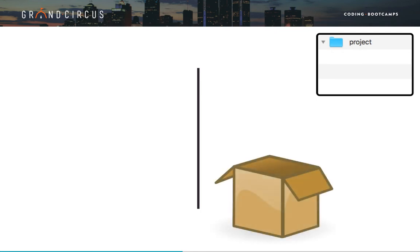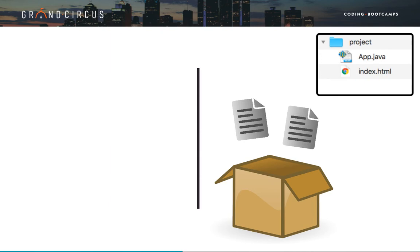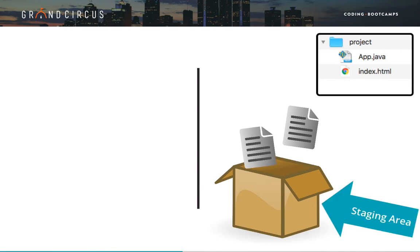Let's summarize the functionality of Git using the box packing analogy from the intro videos. When we create a project and initialize the local repository, it starts out empty. We can create a few files in the working directory using a text editor or IDE. At some point we'll want to create a snapshot of our project with Git — remember, a snapshot is called a commit. The process always starts with selecting files to include in the snapshot by adding them to the staging area. In our shipping analogy, the box represents the staging area, and the command we use is git add.